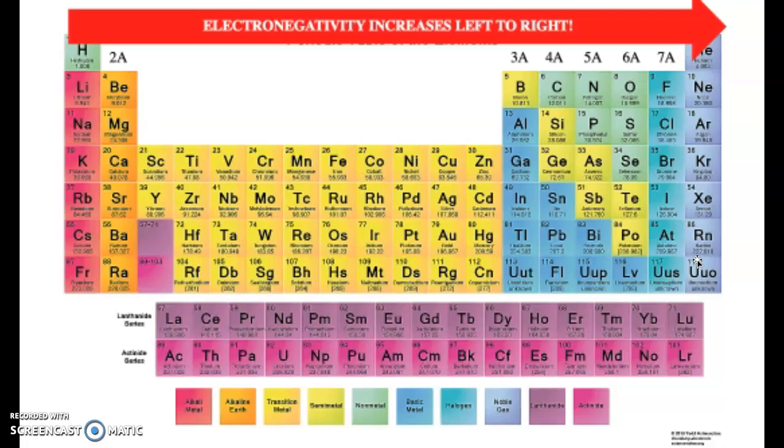For that reason, the right side of the periodic table, except for group 8, has a higher electronegativity than the left side. All right guys, let's practice.